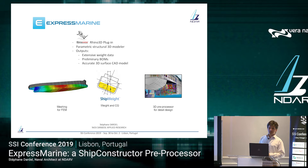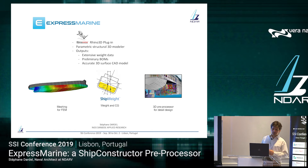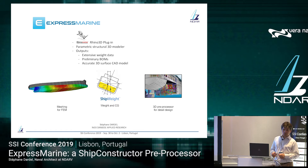You also output an accurate 3D surface CAD model. What do I mean by accurate? It's a model where the intersection between parts is accurate — because by essence, to have a frame intersecting with a shell plate, it has to be an exact intersection. An exact intersection means it can also be used for meshing, for example for FE calculations. So those are the three disciplines that Express Marine will help to trigger.